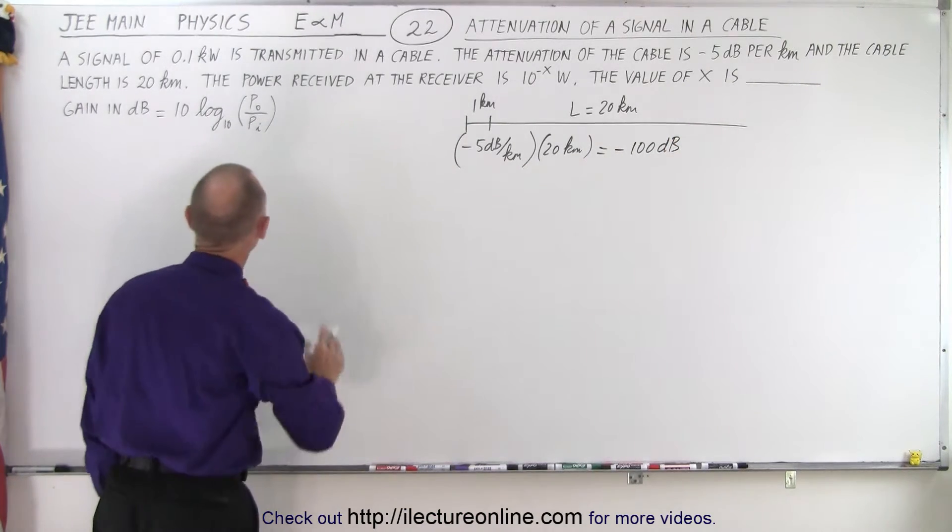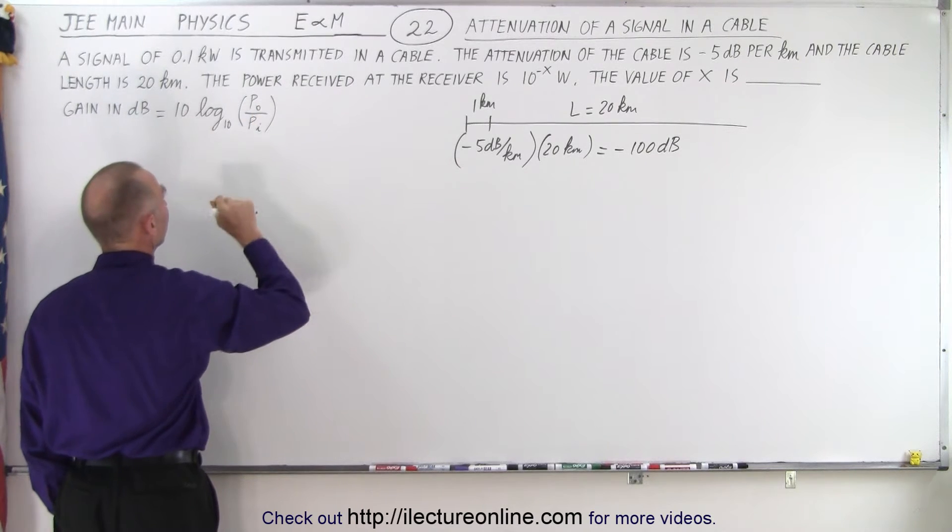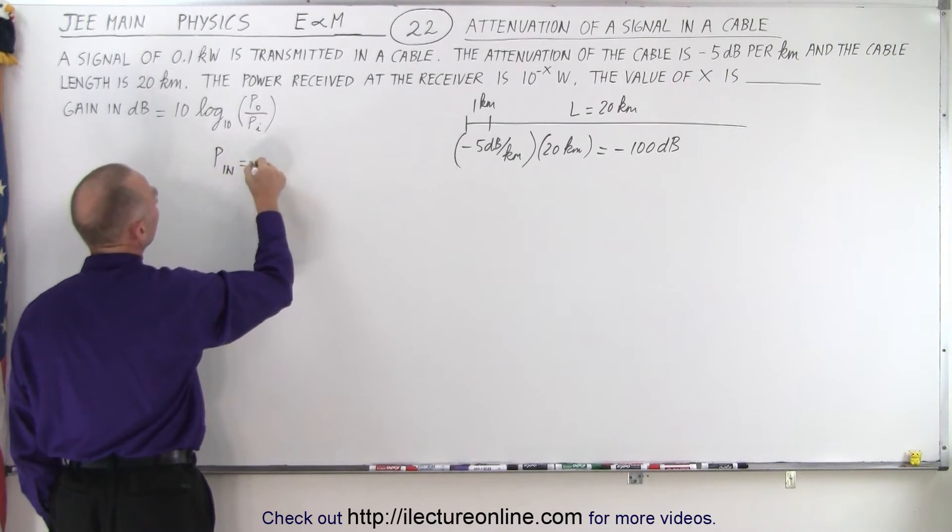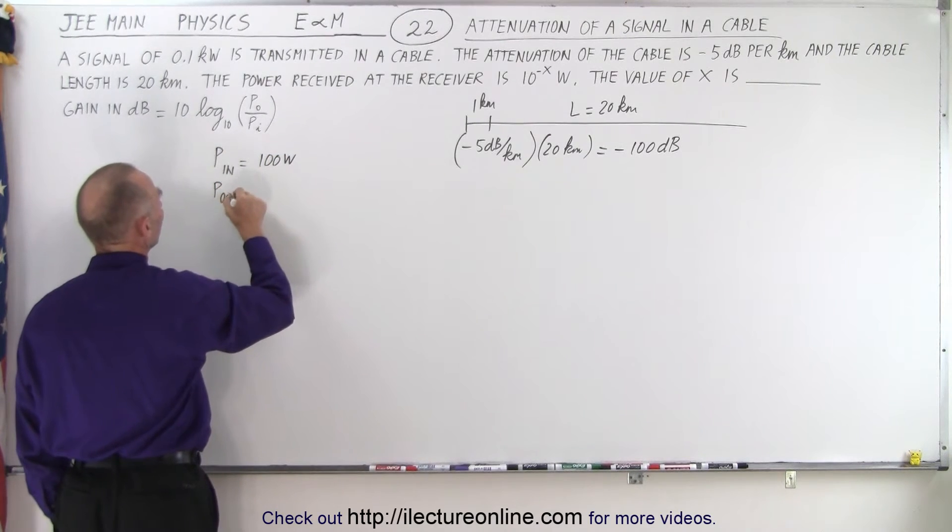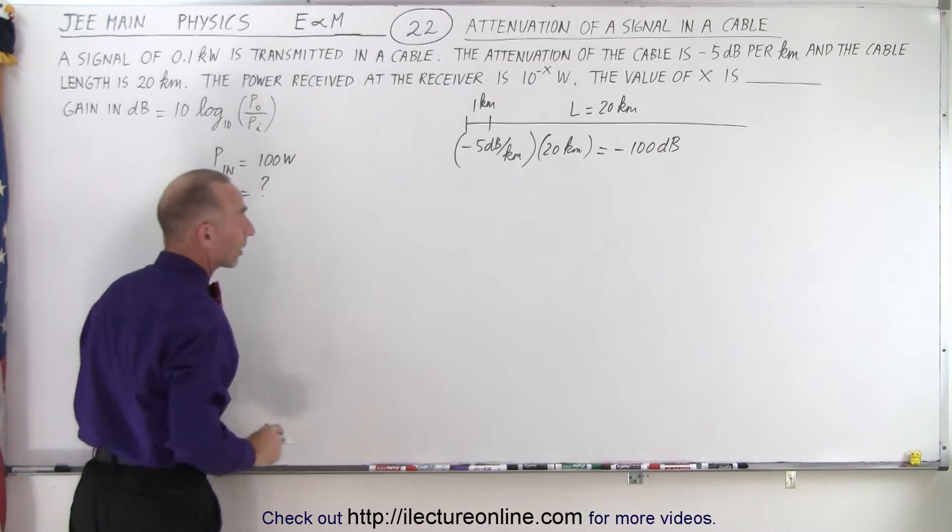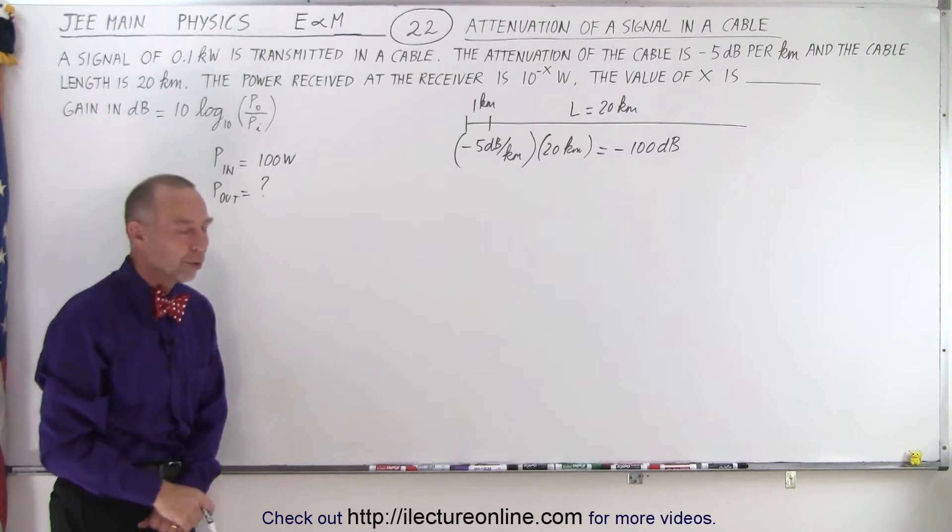Also realize that power, power out divided by power in. Power in to the cable is equal to 100 watts. Power out equals question mark and that's what it's all about. The answer has to be put into that format and we're finding the exponent.